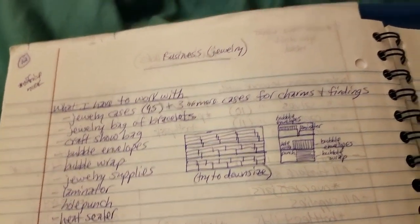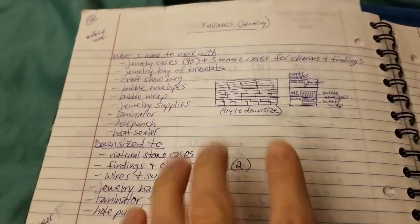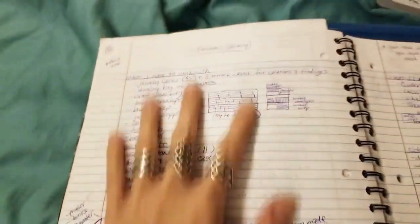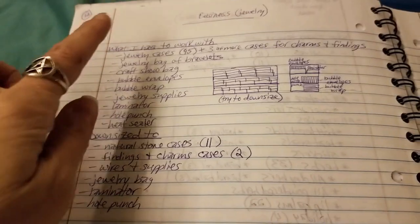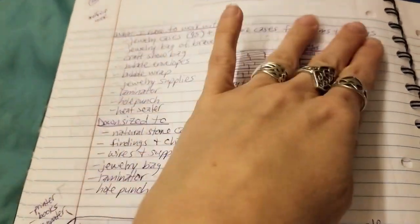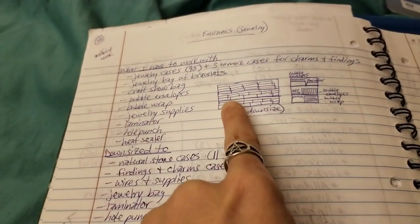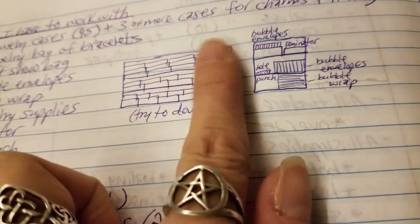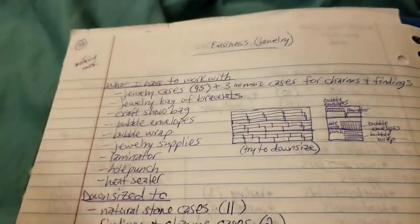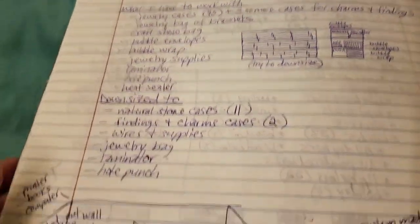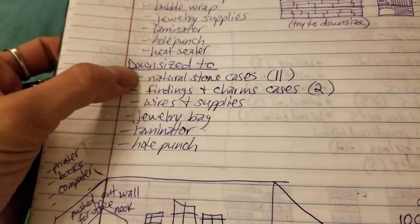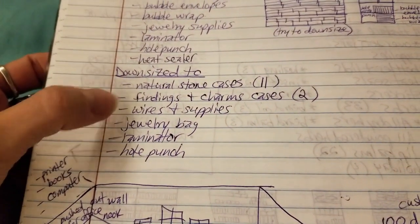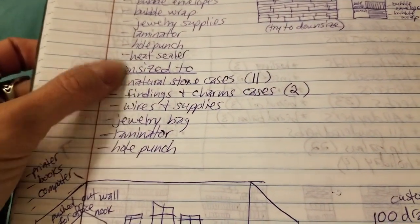What I had to work with - jewelry cases. 45 different jewelry cases. Now notice I didn't bring all of them. I didn't bring any of this, actually. But here's what happened. I was going to bring all of this stuff up here, and that's how many cases I had. I was going to have to find room for all of that. Eliminated all of that. Got rid of all 45 cases of jewelry and ended up downsizing to just natural stones, a couple findings, wires and supplies, just these things.